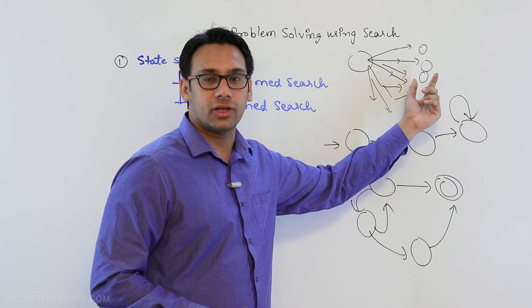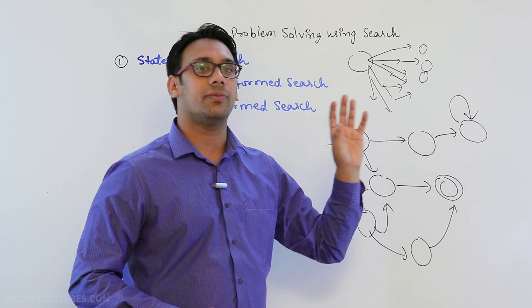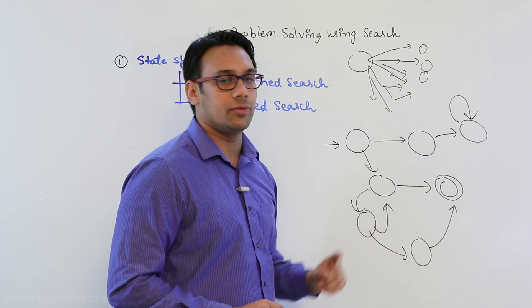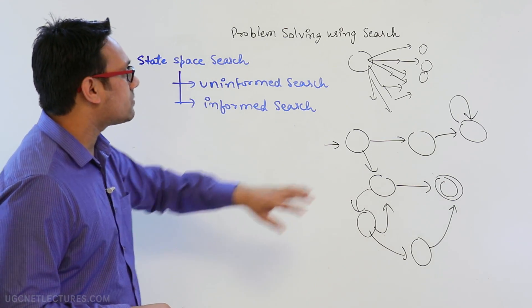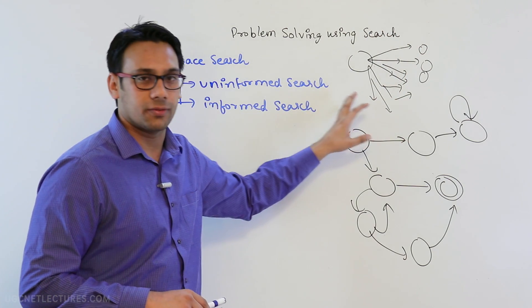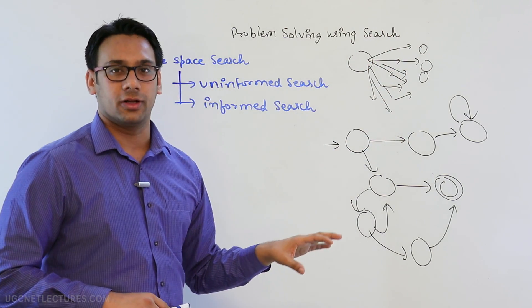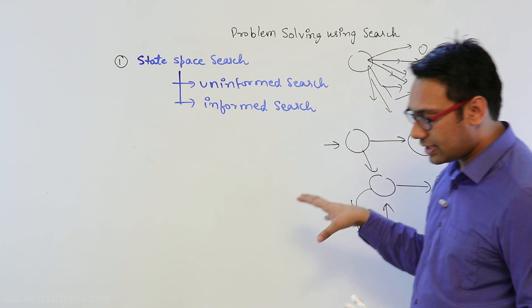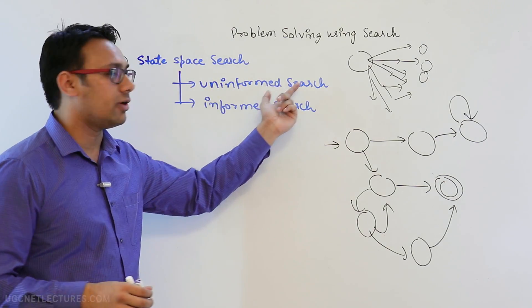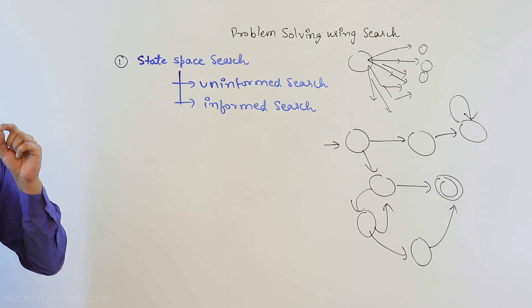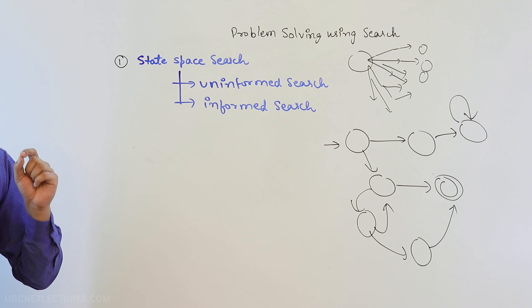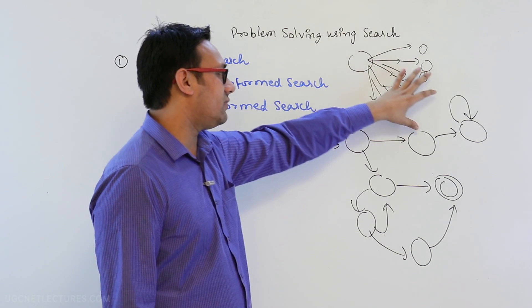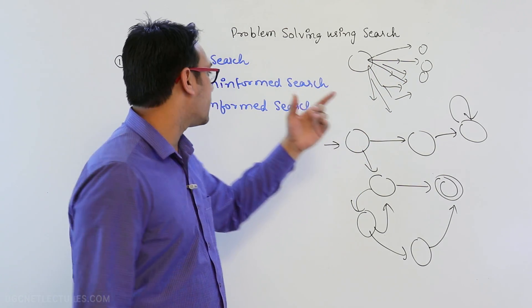Our aim is to reach a particular goal by applying different algorithms like depth first search, breadth first search, and others. When we have no knowledge about the domain of a particular problem, that is called uninformed search. In uninformed search, we do not know any domain-specific information, so we search without any additional knowledge.